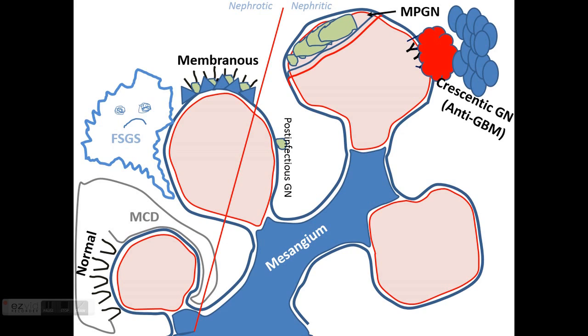There are other things that can create crescents like ANCA disease and immune complex diseases including post-infectious glomerulonephritis that I already mentioned.